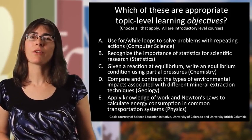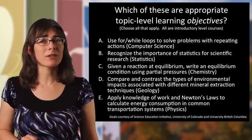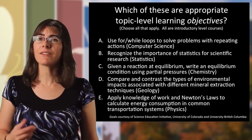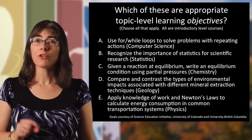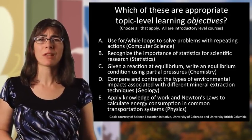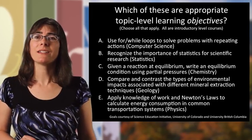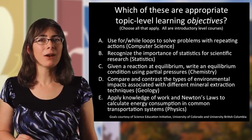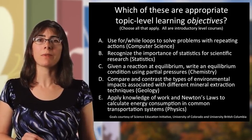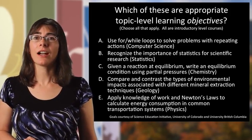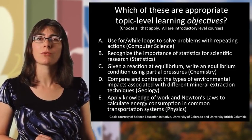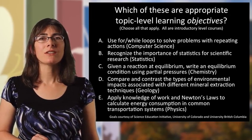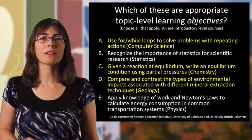What about B — recognize the importance of statistics for scientific research? That's bigger than a particular topic; it would take several units to get to, so B is not a topic-level objective. C — given a reaction at equilibrium, write an equilibrium condition using partial pressures — that would probably be in a unit on partial pressures. D — compare and contrast the types of environmental impacts associated with different mineral extraction techniques — that seems like it would be in a unit on mineral extraction and geology. E — apply knowledge of work in Newton's laws to calculate energy consumption in common transportation systems — that's not something you could get to in a single unit. So A, C, and D are the topic-level learning objectives.